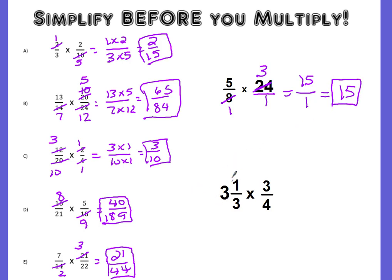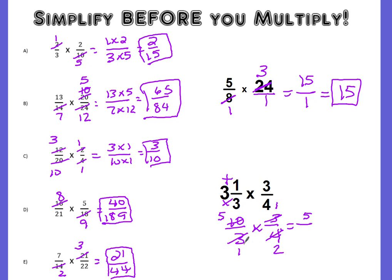With mixed numbers, you still have to change them into improper fractions before you worry about simplifying anything. So 3 and 1 third becomes: 3 times 3 is 9, plus 1 is 10 — so we have 10 thirds times 3 fourths. Diagonally, I can divide out the 3s: 3 divided by 3 is 1, and 3 divided by 3 is 1. Then cross-simplify the 10 and the 4 by dividing by 2: 4 divided by 2 is 2, and 10 divided by 2 is 5. Multiplying numerators: 5 times 1 is 5. Denominators: 1 times 2 is 2. That gives the improper fraction 5 halves, which converts to 2 and 1 half.